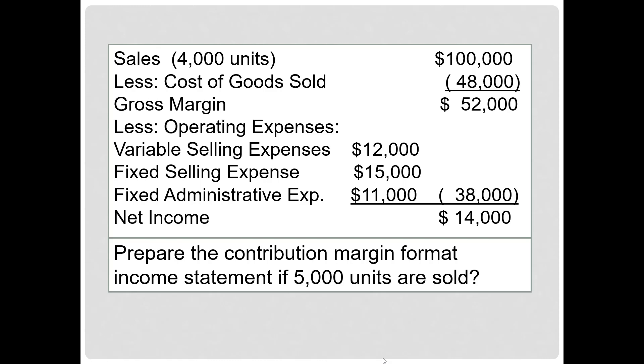Prepare the contribution margin format income statement if 5,000 units are sold. The first thing you must recognize is that the activity level is changing — we are going from sales of 4,000 units to sales of 5,000 units. You will need to analyze what impact that will have on each of the variables in the income statement.